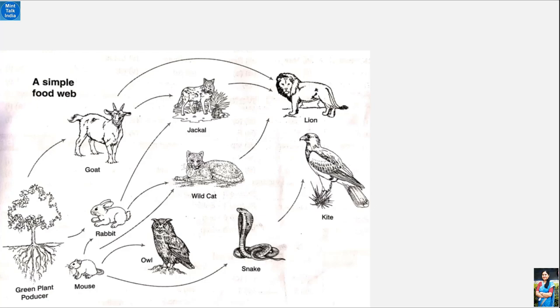Food chain is one more thing. Now in this photograph, we can see many chains. A bear will eat goat.